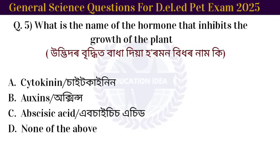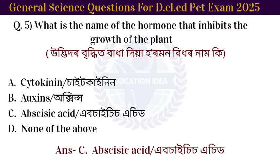Next question: what is the name of the hormone that inhibits the growth of the plant? The answer is abscisic acid.